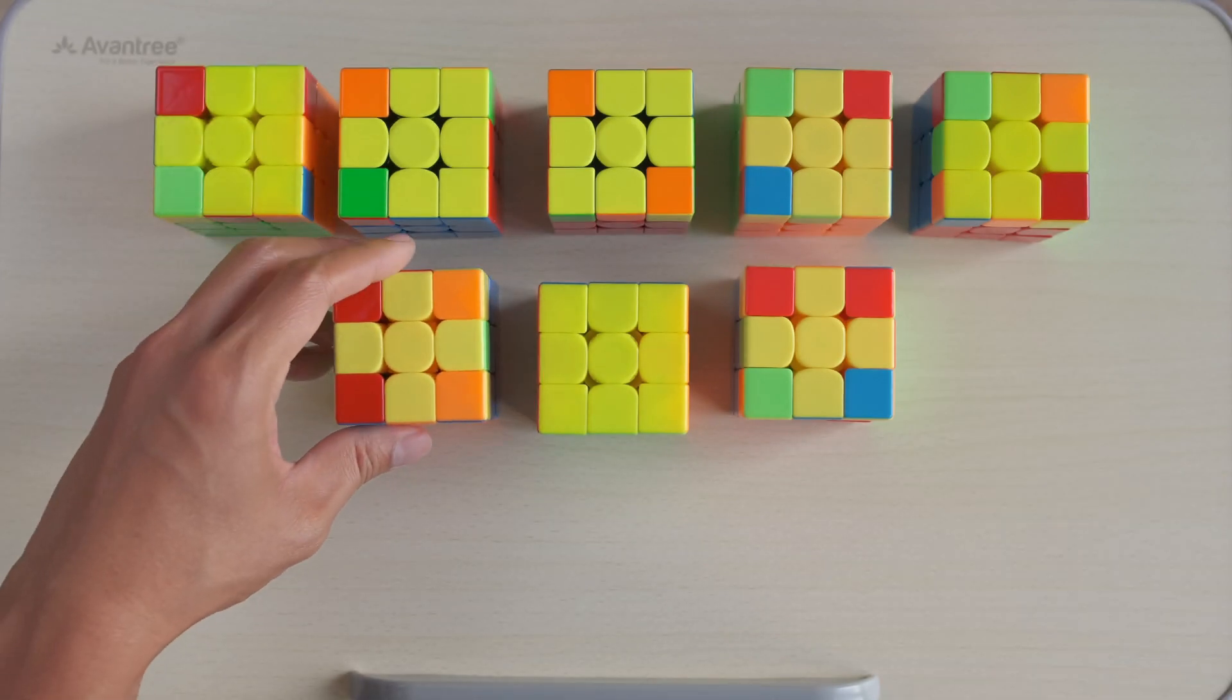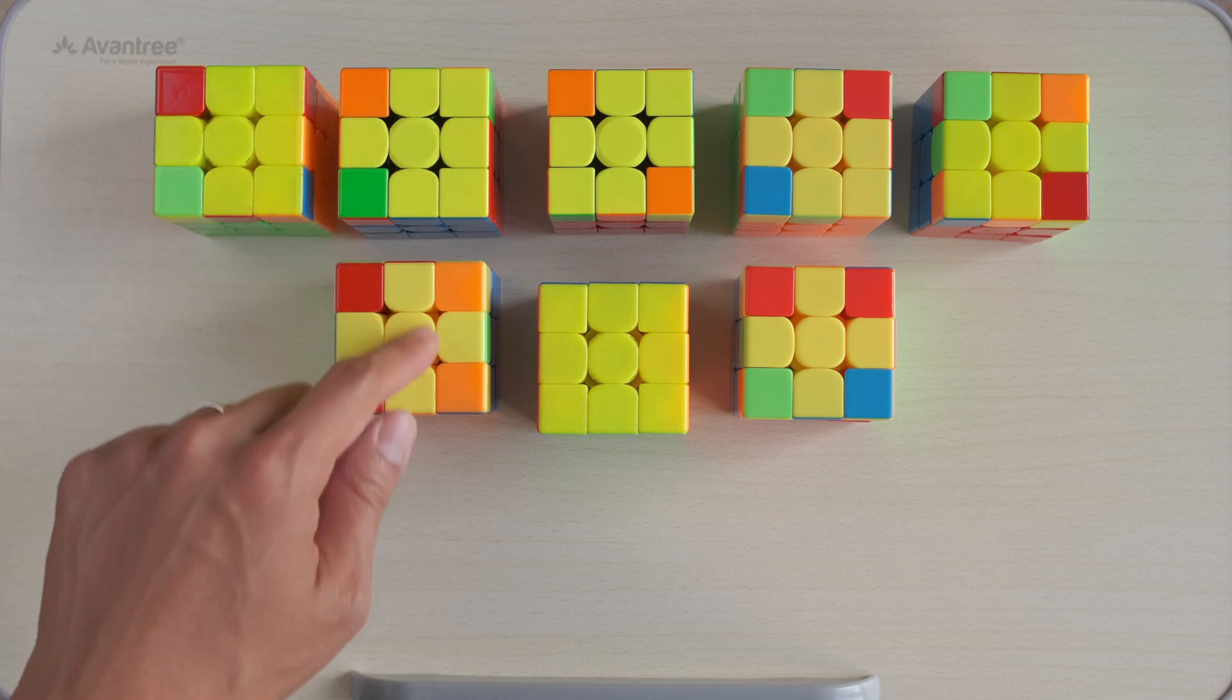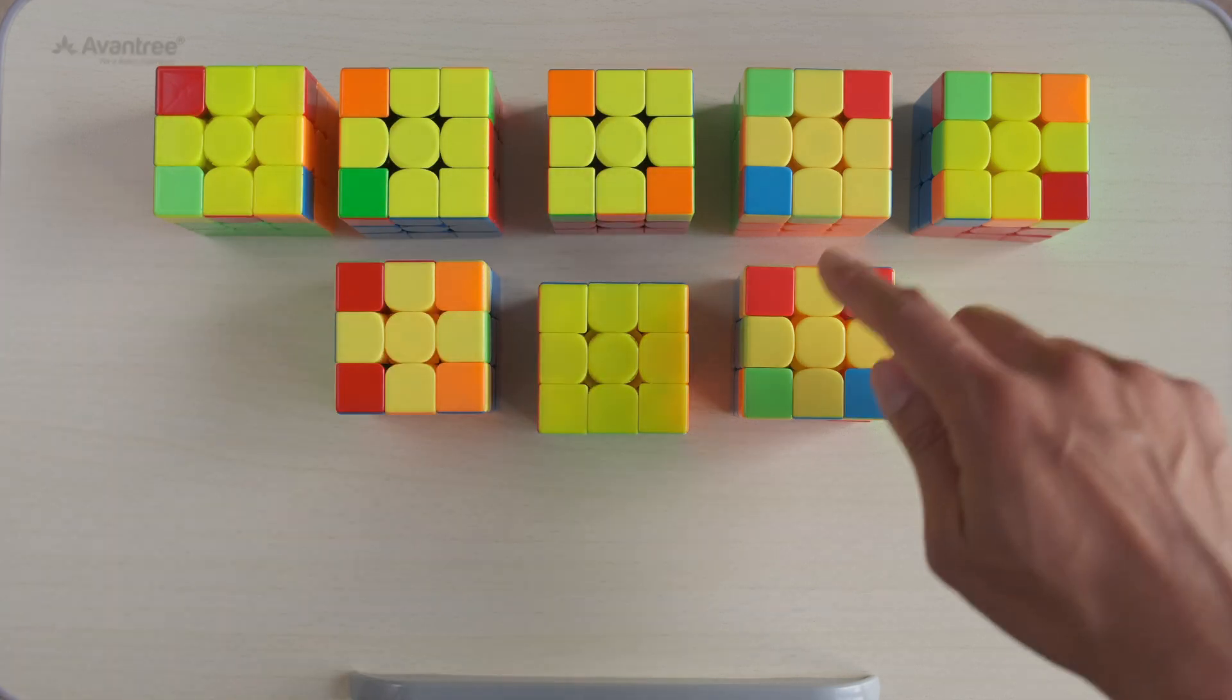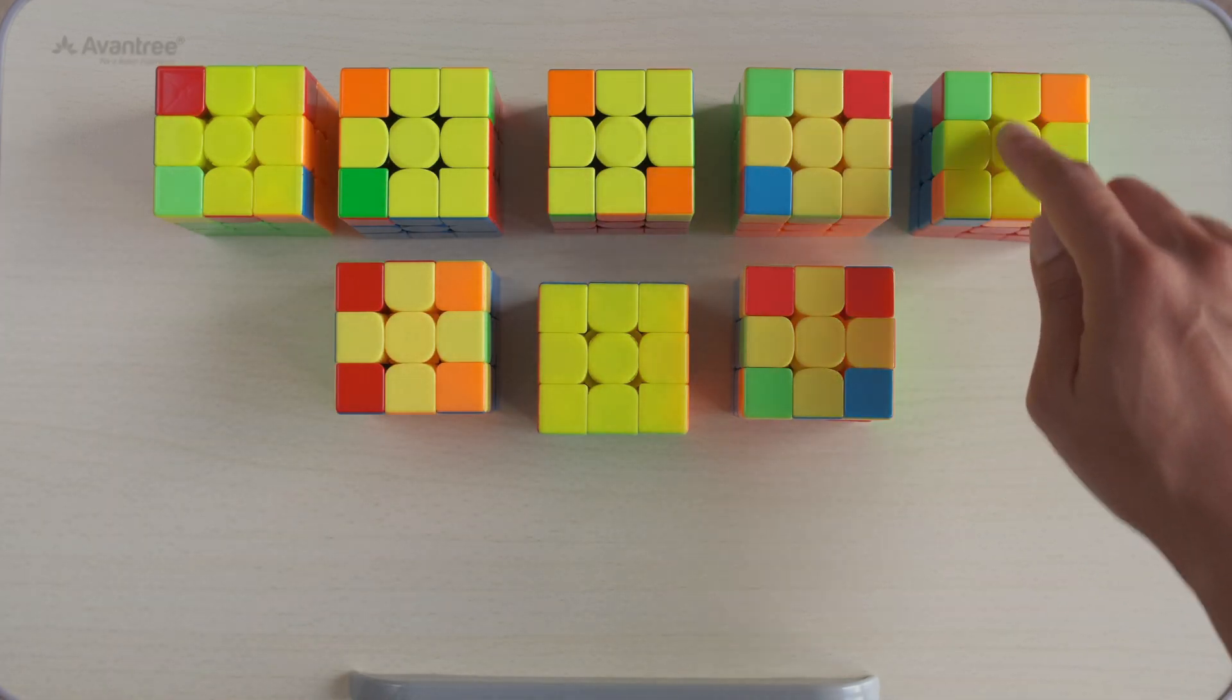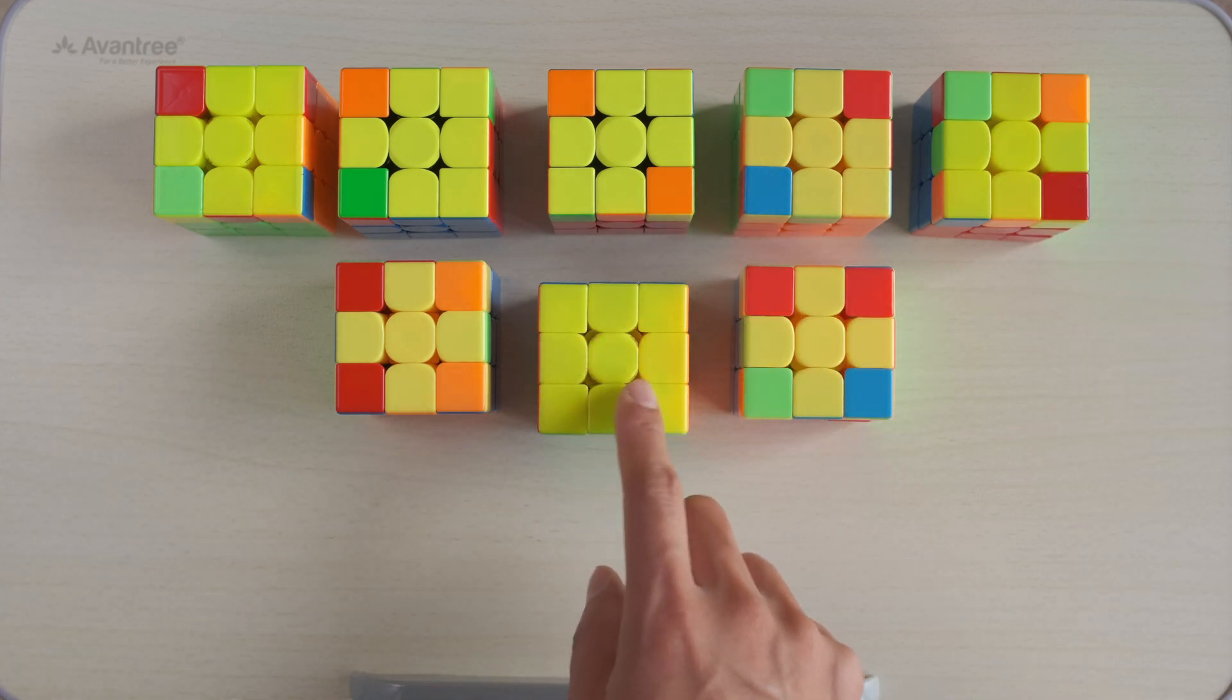Here I have the 7 patterns the yellow cross can be in: 1st, 2nd, 3rd, 4th, 5th, 6th and 7th. Our goal is to create one solid yellow color at the top.